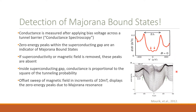The group swept the magnetic field in increments of 10 millitesla. For positive magnetic fields, a zero energy peak arose, as we can see by this shape with these peaks here. These zero energy peaks are due to Majorana resonance, so it is an indicator of Majorana bound states. If the superconductivity of the system was removed, or the magnetic field was removed, these peaks were absent, as we can see here by this part essentially being flat.